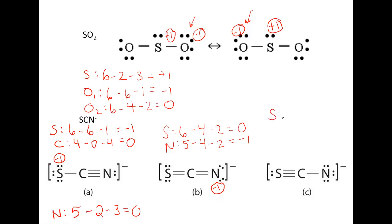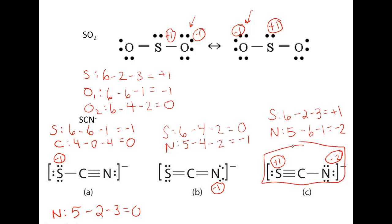For Structure 3 of SCN⁻: S starts off with six valence electrons, has two dots and three dashes, giving it a formal charge of plus one. N starts off with five valence electrons, has six dots and one dash, giving it a formal charge of negative two. These add up to negative one, which is correct. Comparing all three structures: Structure 3 is most obviously less prevalent than the others because it has more formal charges. So Structure 3 will not contribute as much to the overall resonance hybrid. Structures 1 and 2 both have only a single formal charge of negative one, so we can't distinguish between them yet.